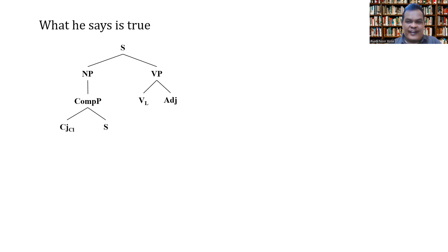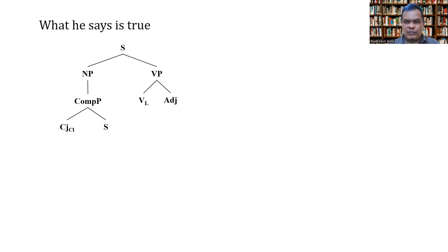A complement phrase is composed of a complementizer conjunction and a sentence. Complementary conjunctions include all of the question words: what, who, where, why, how, and so on. In addition to these question words, complementary conjunctions also include 'that,' 'whether,' and 'if.'